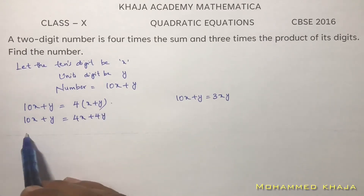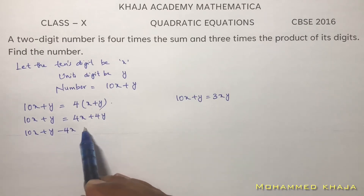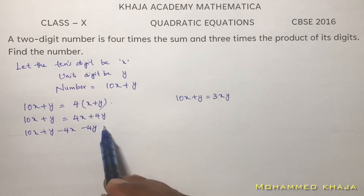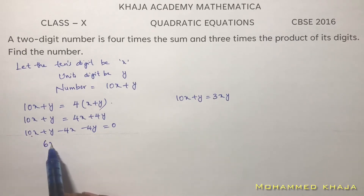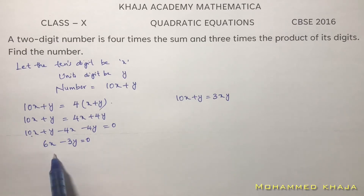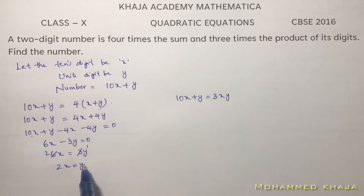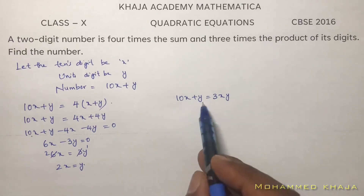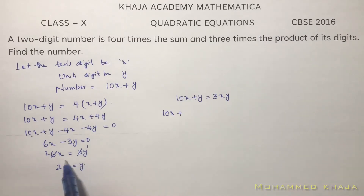Simplifying the first equation: 10x plus y equals 4x plus 4y, so 10x plus y minus 4x minus 4y equals 0. That gives 6x minus 3y equals 0, so 6x equals 3y, which simplifies to 2x equals y.